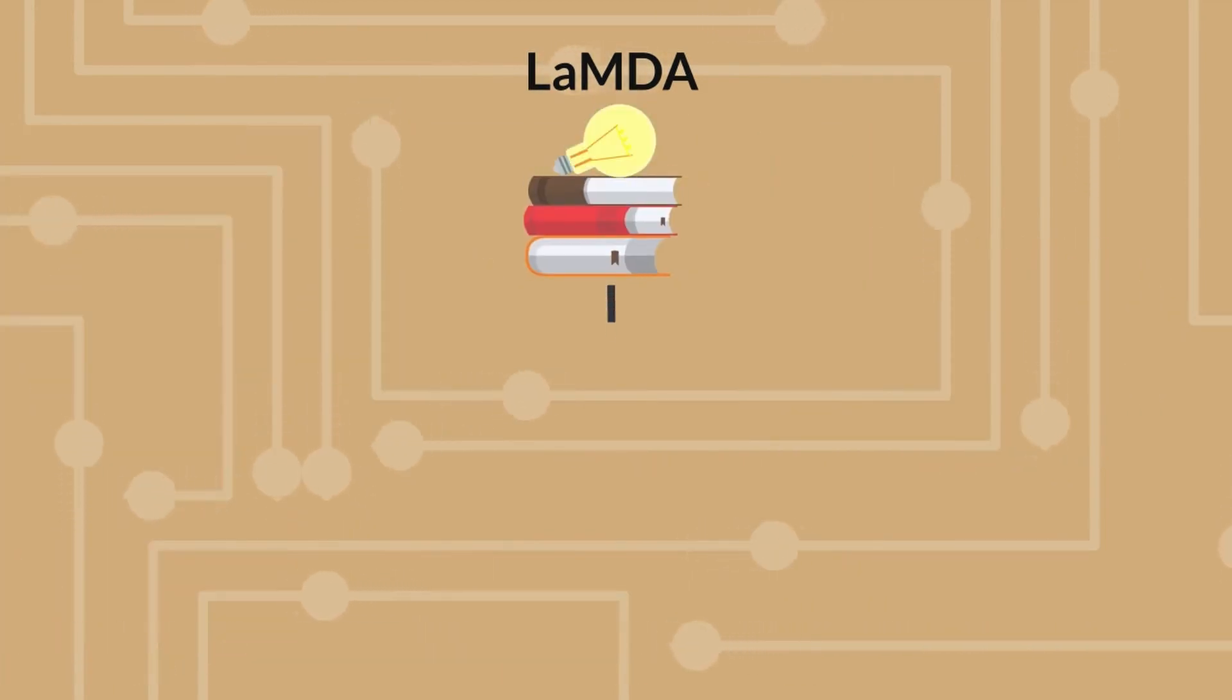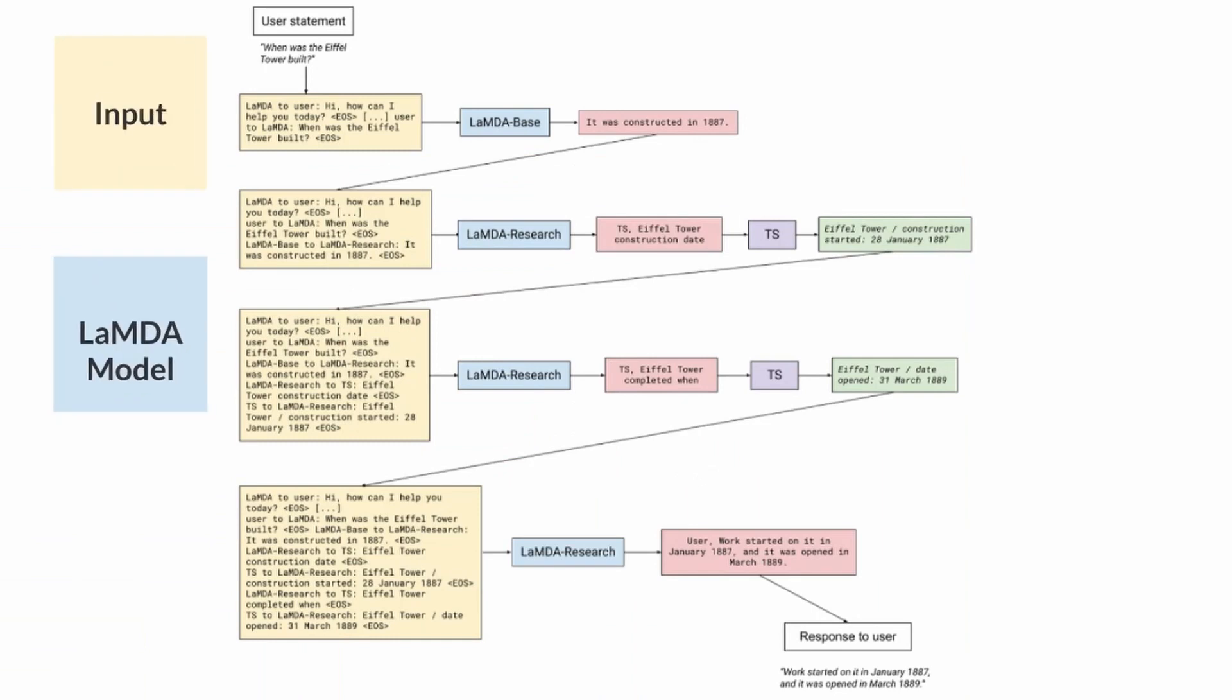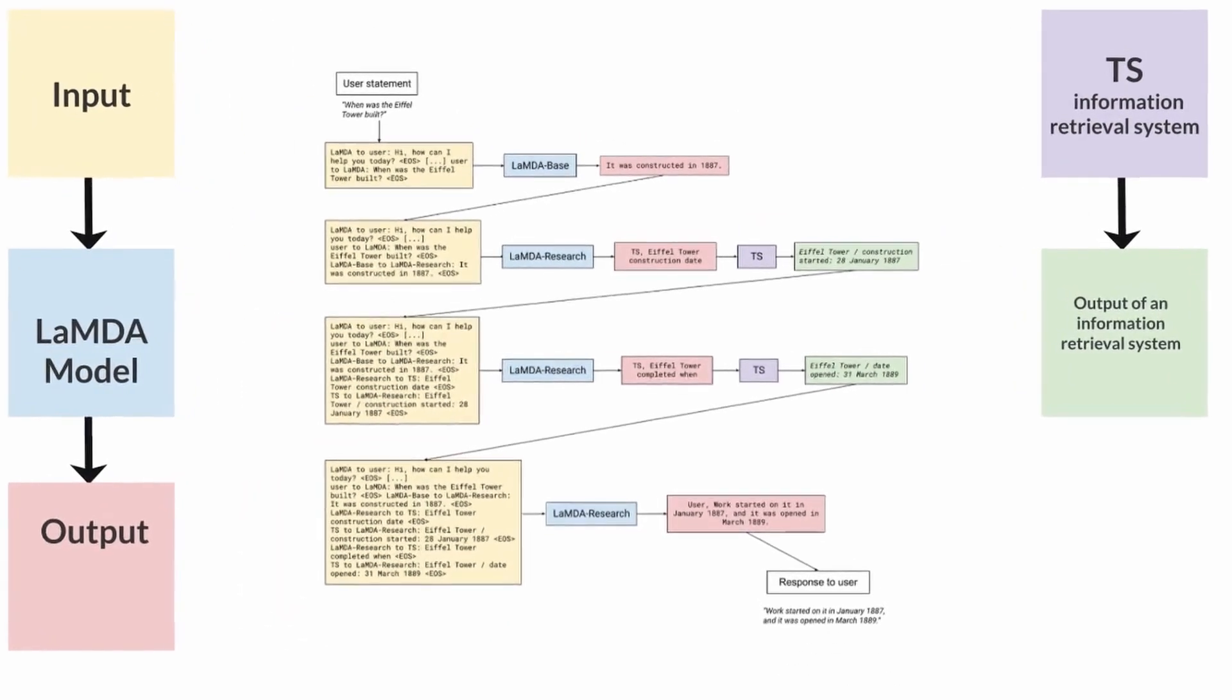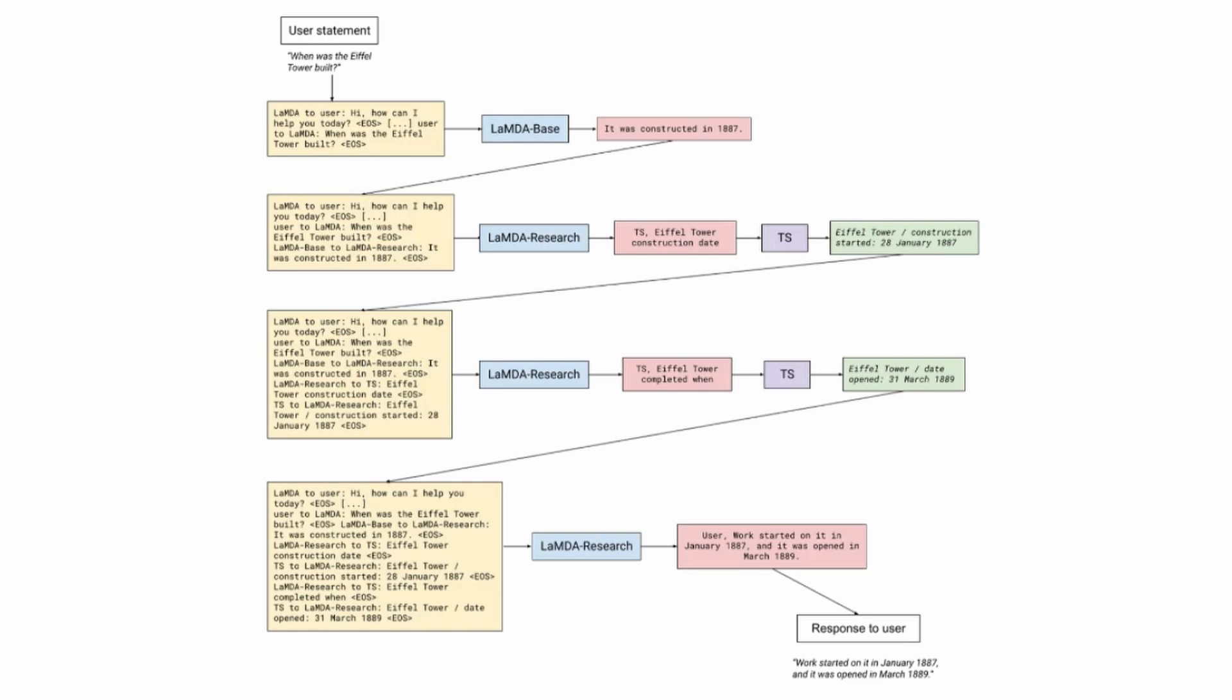Further, by integrating external knowledge sources as shown in the illustration, Lambda can achieve a higher degree of safety and factual accuracy in its responses. Lambda handles groundedness through interactions with an external information retrieval system. The blue box is the model, yellow box is the input to the model, and the red box is the output of the model. TS is the toolset which includes the information retrieval system, a calculator, and a translator. The green box is the output of an information retrieval system tool. As discussed in the main text, the Lambda-based model is called first, followed by sequential calls to the Lambda research model. The choice between querying the information retrieval system or responding to the user is determined by the first word output by Lambda research, which identifies the next recipient.